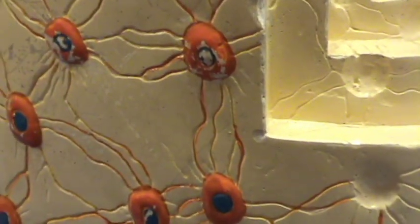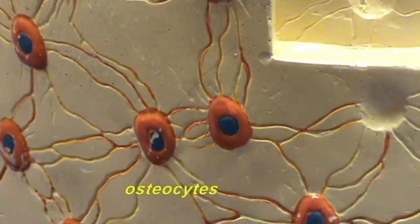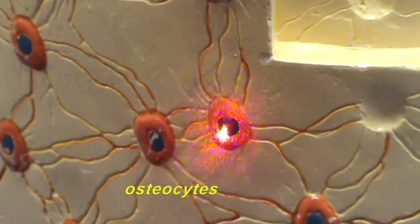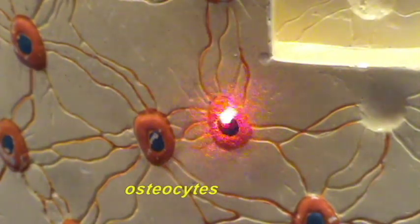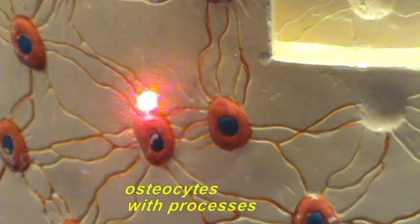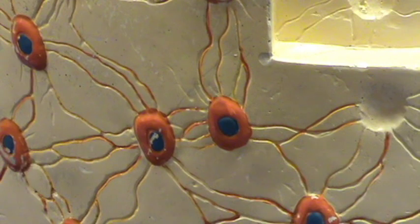You can see the osteocytes and the blue objects within the osteocytes would be the nuclei. Notice also that the processes of these osteocytes have been colored in, and you can see that they are penetrating through the narrow channels which we refer to as the canaliculi.